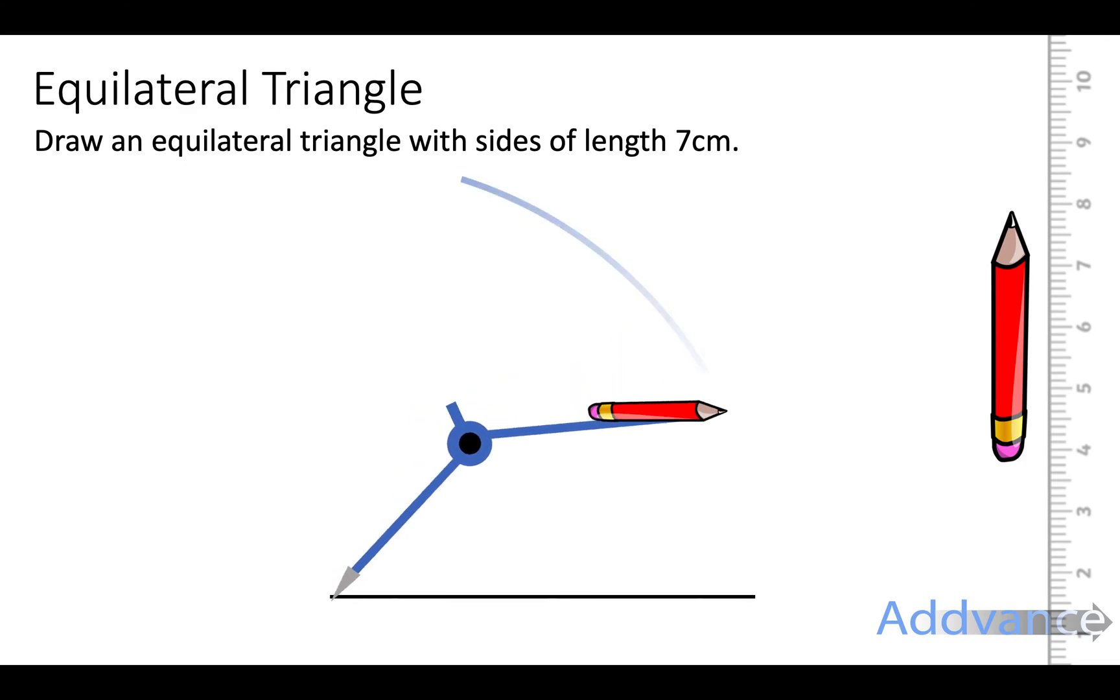Now we've done that and we draw an arc around one of the points for 7cm. Remember the needle of the compass needs to be exactly on the end of the line. And we do that again over here. The needle of the compass is exactly on the end of the line. We've now drawn two perfect arcs that are both 7cm in radius around the two ends of the line.